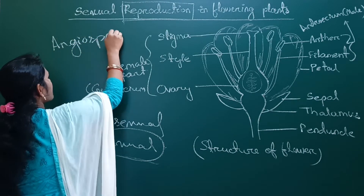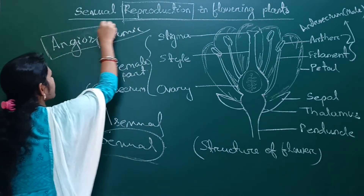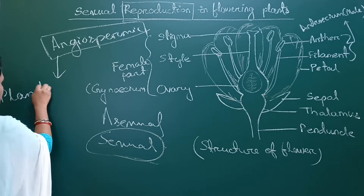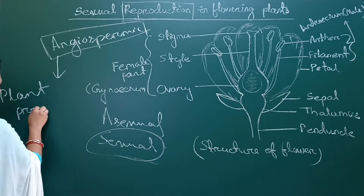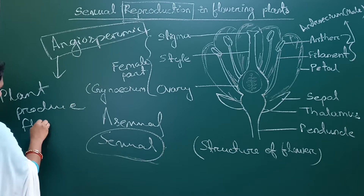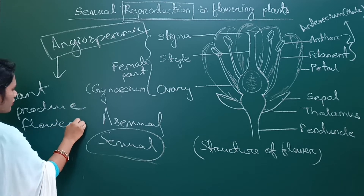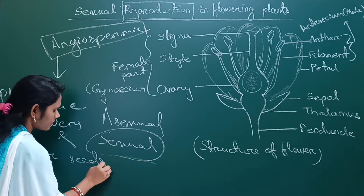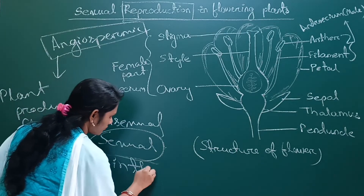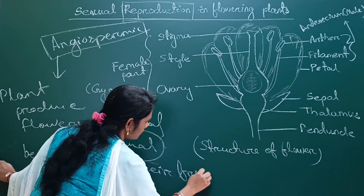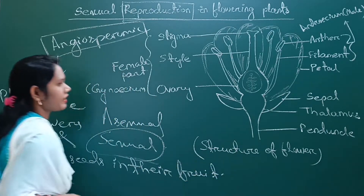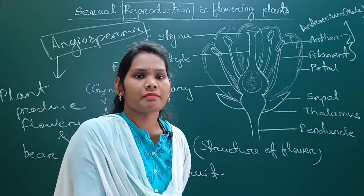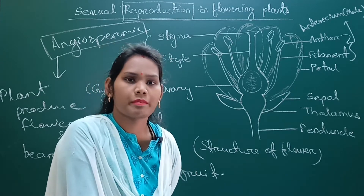Do you know what is an angiospermic plant? Angiospermic plants produce flowers and bear seeds in the fruit. That type of plant is called an angiospermic plant, and in angiospermic plants the mode of reproduction is sexual.